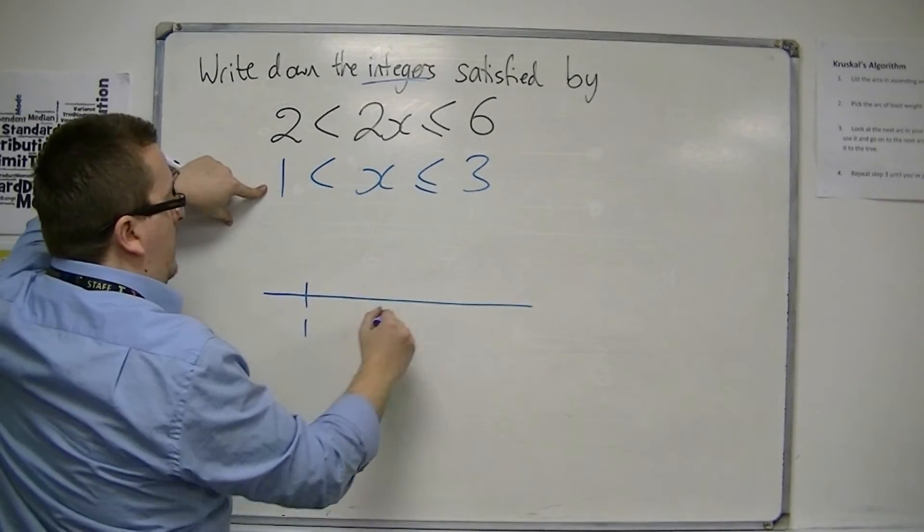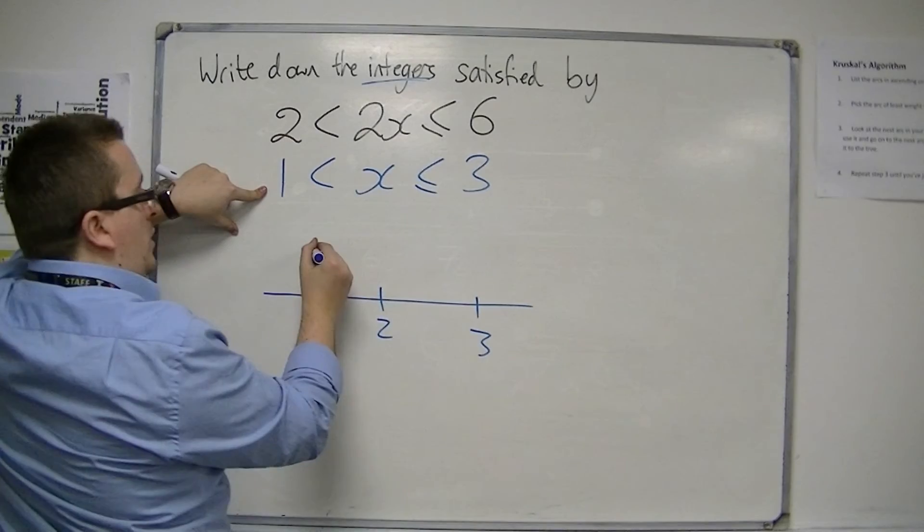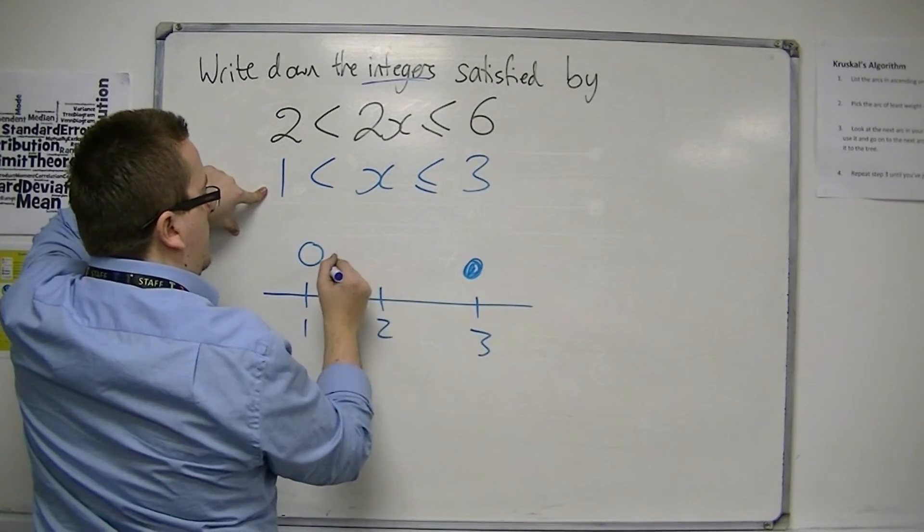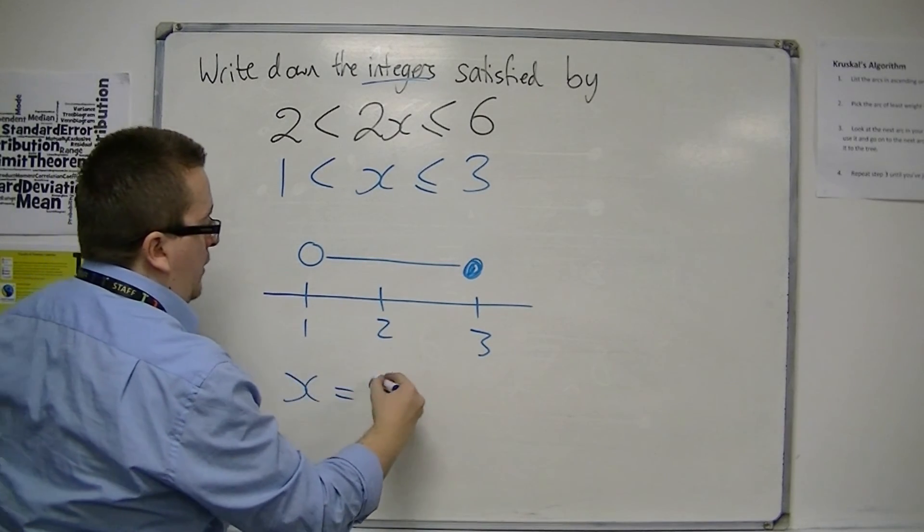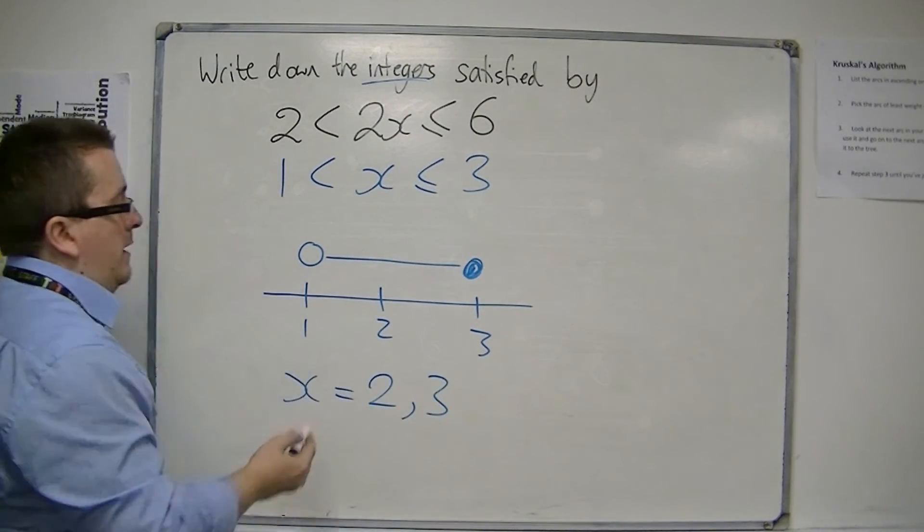So between 1 and 3, hollow dot on the 1, solid dot on the 3, and the values between, x must be equal to either 2 or 3, and not 1.